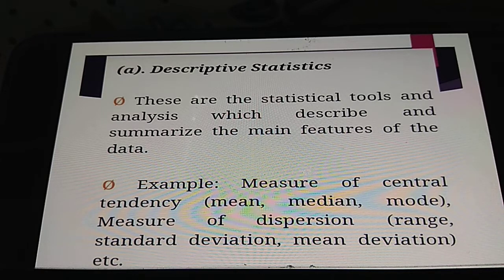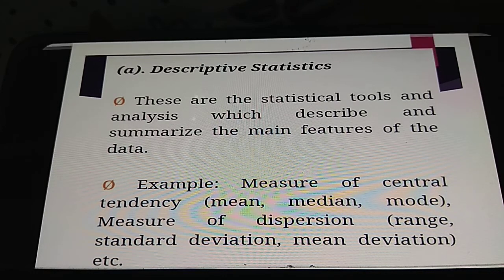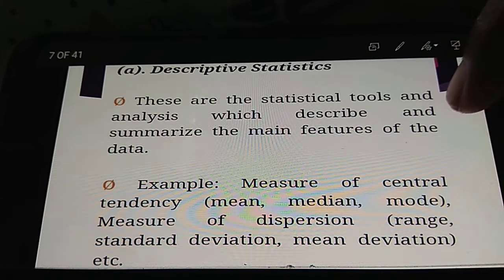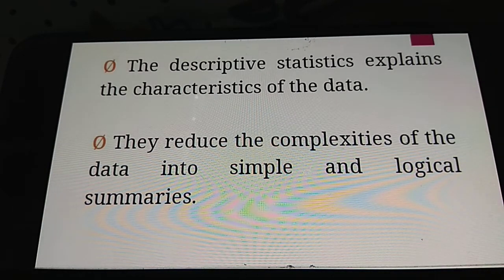Descriptive statistics: these are statistical tools and analyses which describe the main features of the data. For example, the measures of central tendency — mean, median, and mode — and the measures of dispersion such as range, standard deviation, and mean deviation. Descriptive statistics explains the categories of data and reduces the complexities of data into simple and logical summaries.